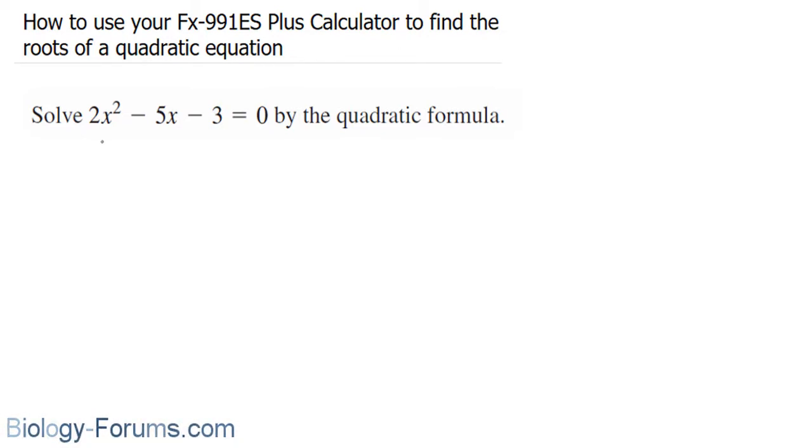In our case, this is our A value, which is the x squared term. The x term is our B, and the C term is our constant, the one that does not contain any variable.